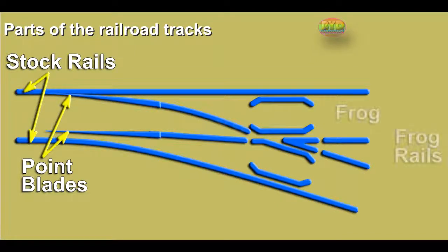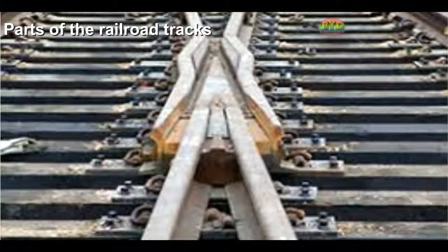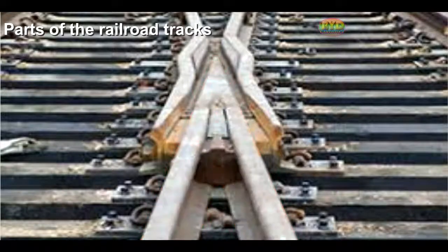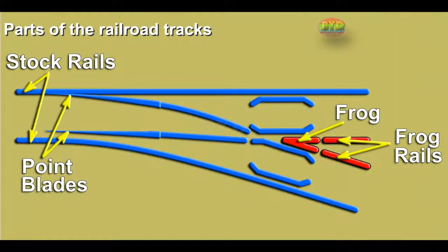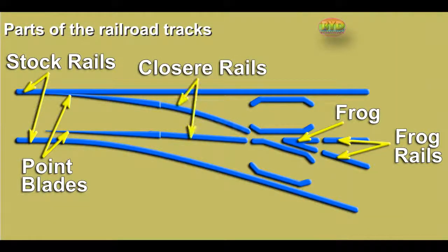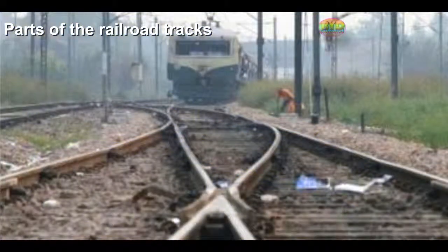A frog is a component placed where one rail crosses another, referring to the crossing point of two rails. The rest of the English-speaking world calls such units by the more obvious term 'crossings.' Closure rails are the straight or curved rails positioned in between the heel of the switch and the toe of the frog.